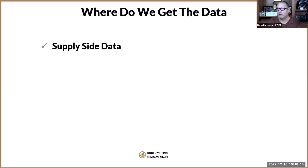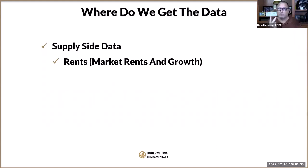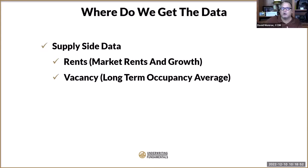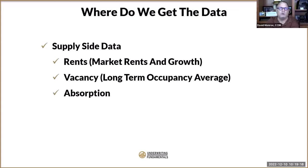So what data are we looking for on the supply side? First, rents — both market rents and growth. That's two of the six assumptions right there: what are market rents now, and what is the rent growth moving forward? Then we look at vacancy — that long-term occupancy average. CoStar goes all the way back to 2000, giving us 22 years of history. We can look at rents annually or quarterly.